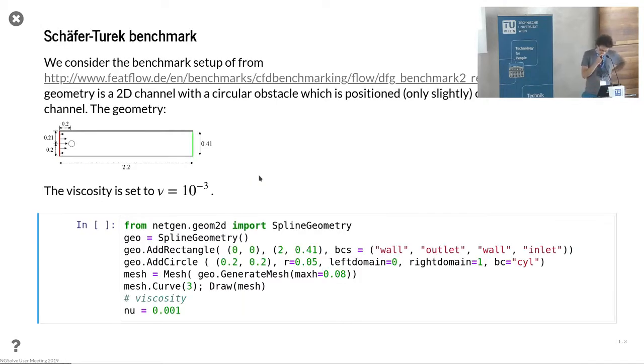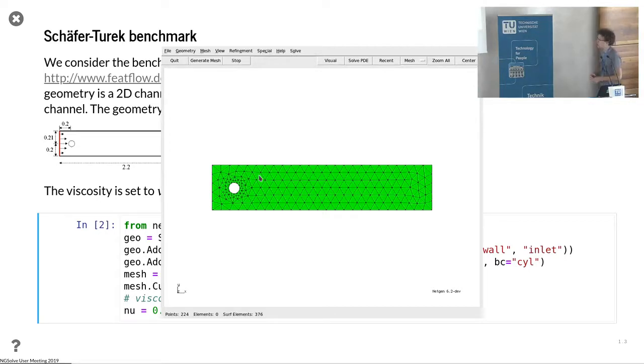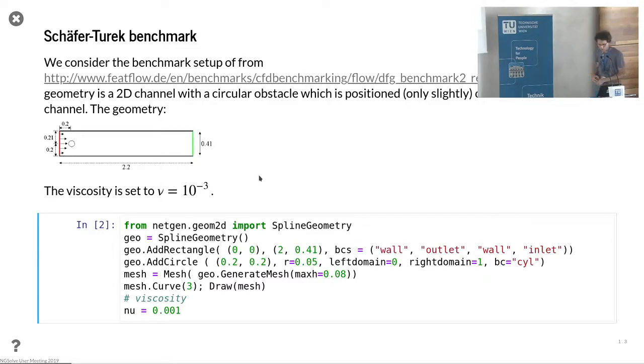Again, just importing the stuff. We considered the same geometry that we already saw for the Stokes example. So this Schäfer-Turek geometry where you have a cylinder or circle in the middle and you have some flow around it. We use the same labels as before, so we have different boundary conditions for the wall at the top and bottom, with a cylinder in the middle, inlet left, outlet on the right.